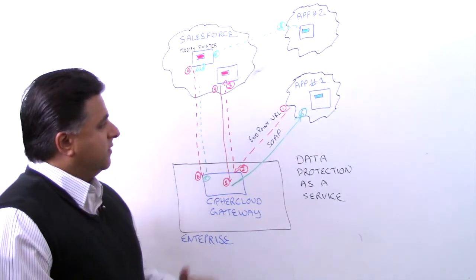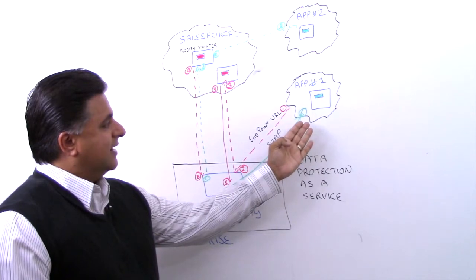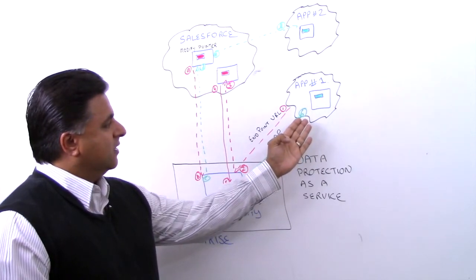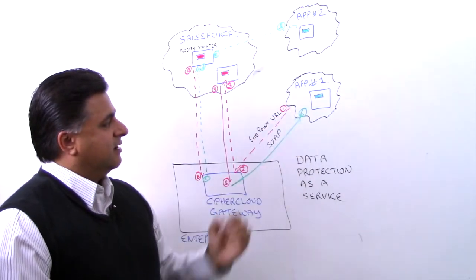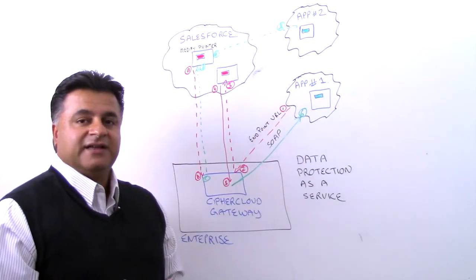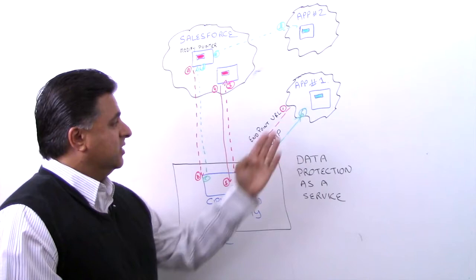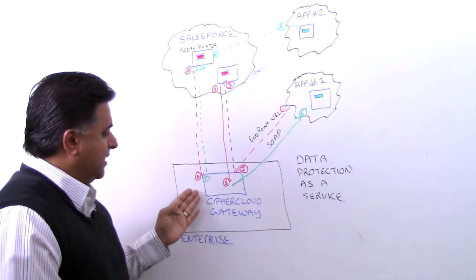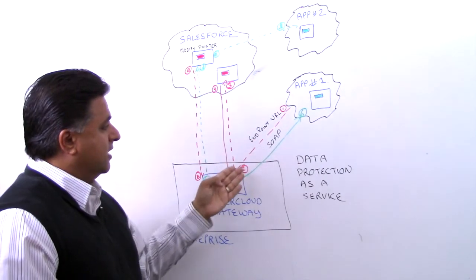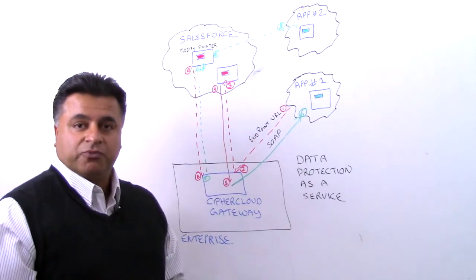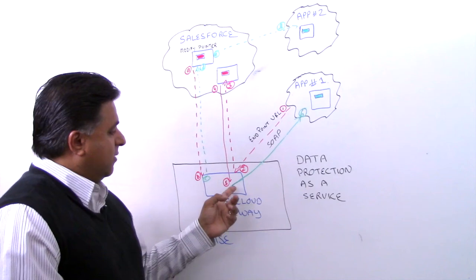I'll start with this application number one, and it requires that information from Salesforce. We actually use an endpoint URL here depicted in number one. That means we change the destination of that request to point to the CypherCloud gateway in the enterprise domain. So that first request comes through, and we're actually using a SOAP request in this case. It hits our gateway.